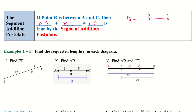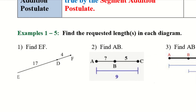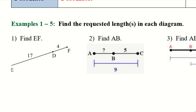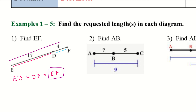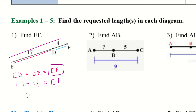Let's try a few examples. I want to find EF. I know that if I take ED, this part of the segment, and add it to DF, this part over here, then it's going to equal the entire thing, EF, the whole line. One part plus the other part gives me the whole thing. ED is 17 and DF is 4, so EF equals 21.